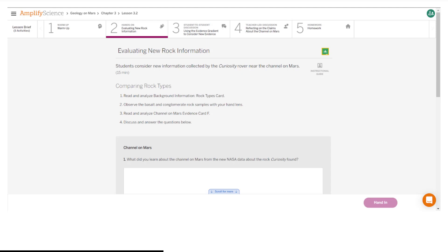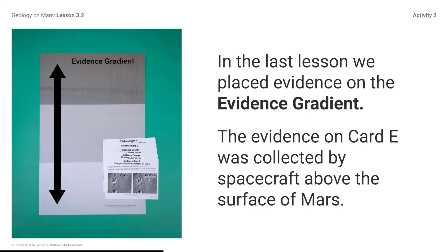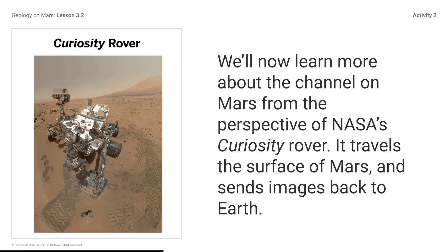Here's what your student screen looks like for this part of the lesson. In the last lesson, we placed evidence on the evidence gradient. The evidence on card E was collected by spacecraft above the surface of Mars. We'll now learn more about the channel on Mars from the perspective of NASA's Curiosity rover, which travels the surface of Mars and sends images back to Earth.